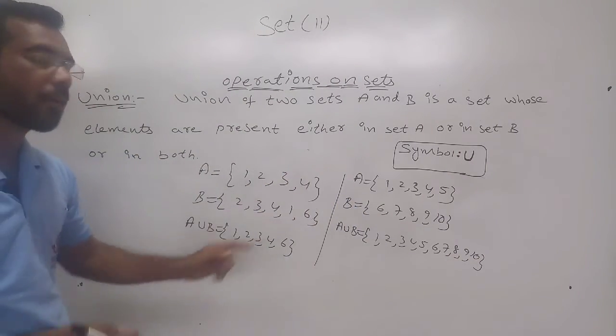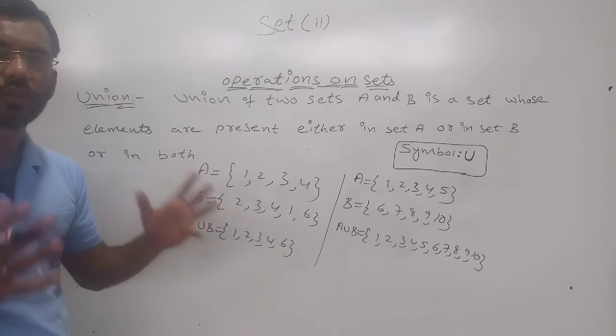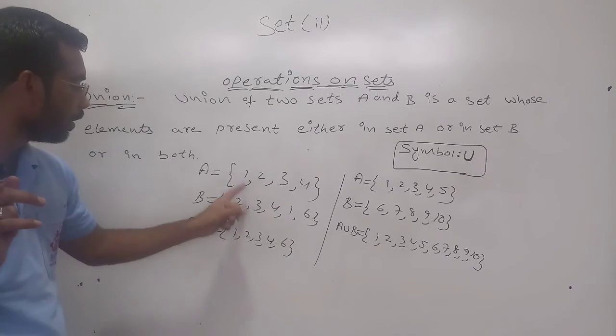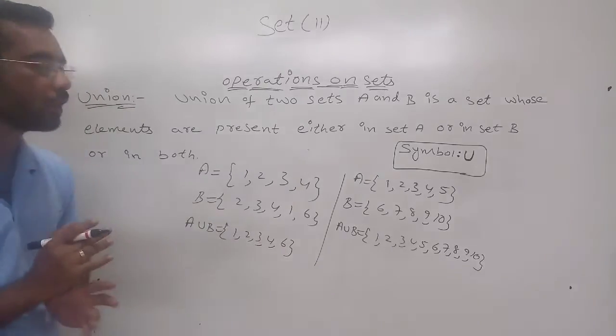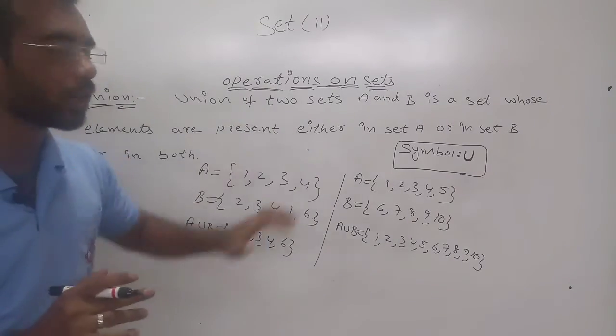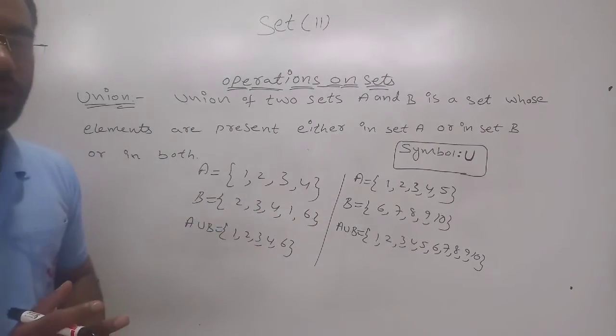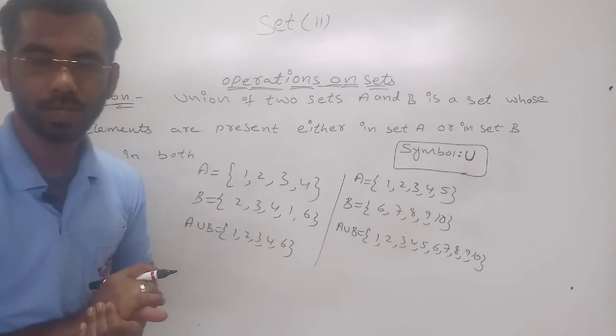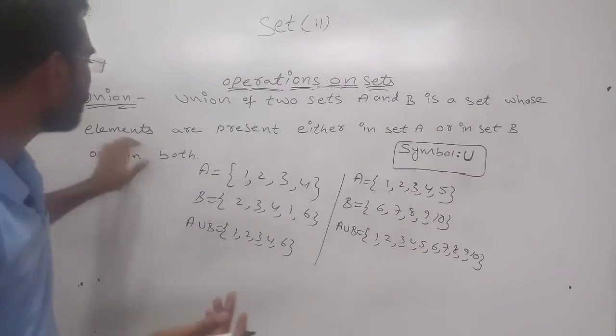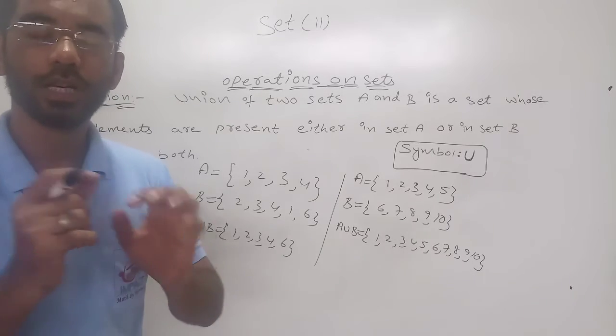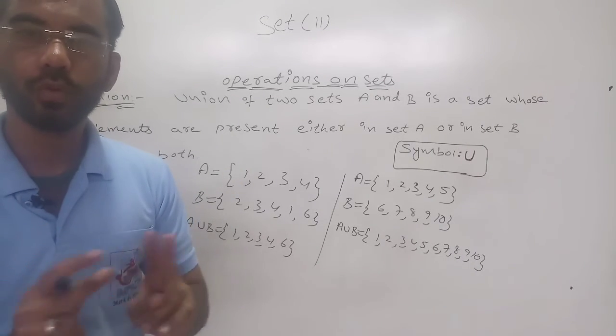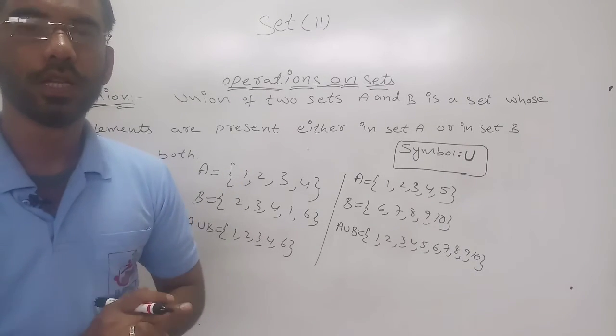You should not write repeatedly. If it is given 2 times, 3 times, whatever it may be, you have to take only one time. Here, 2 times it is given, you have taken only one time. What is union then? Union of 2 sets A and B is a set whose elements are present in A or in set B or in both the sets.